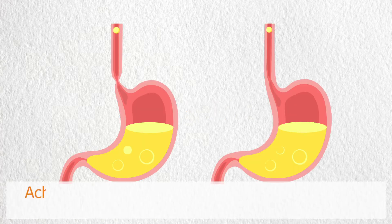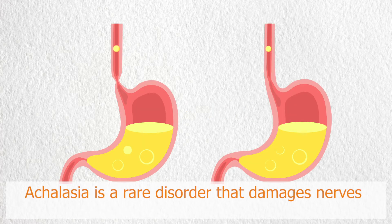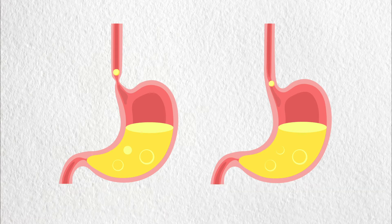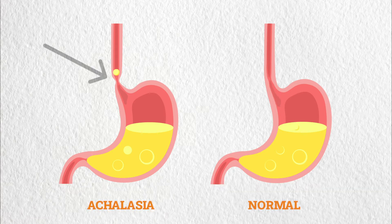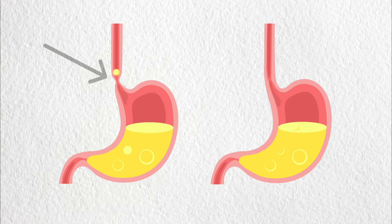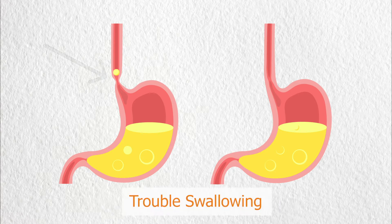Achalasia is a rare disorder in which damaged nerves in your esophagus prevent muscles at its lower end from allowing food to enter your stomach. Symptoms include trouble swallowing, heartburn and chest pain.